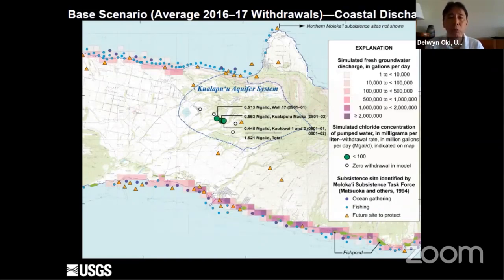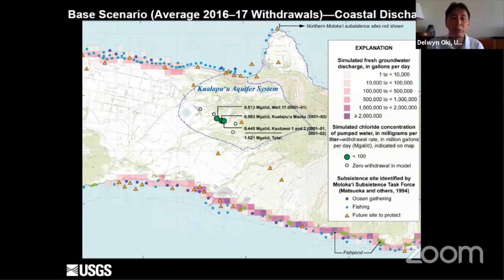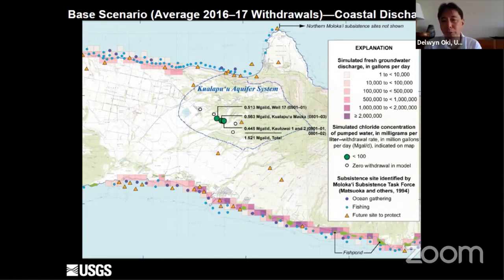We also used the model to evaluate how coastal discharge would be affected. We developed this base scenario to describe existing conditions and summarized where groundwater discharge primarily occurs along the northern and southern parts of the island. Darker colors on the map indicate greater groundwater discharge and lighter colors indicate lesser discharge. The darker colors are mainly along the southern coast, more toward the eastern part of the area. This groundwater discharge pattern serves as the base from which we compute how much reduction occurs when we start pumping more groundwater from the Kualapuu aquifer system.